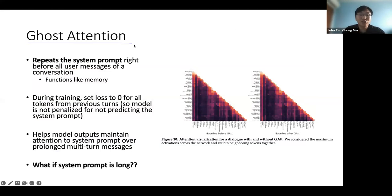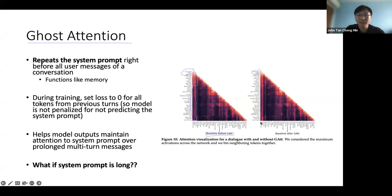The attention mechanism — let's say your prompt is 'Act as Oscar Wilde' — what we want is for it to be attended to as widely as possible, so all the remaining tokens attend to it. You want this part to be as bright as possible. But without ghost attention, only the earlier part attends to the system prompt; the back part is kind of forgotten. With ghost attention, you can see it's more brightly lit overall, and even the last messages like 'What is your name? My name is Oscar Wilde' attend to it.